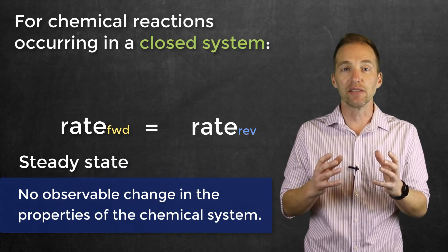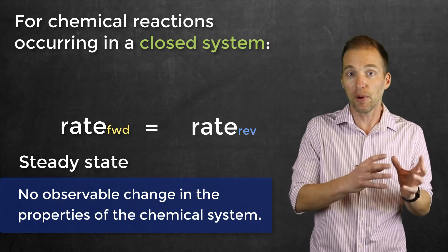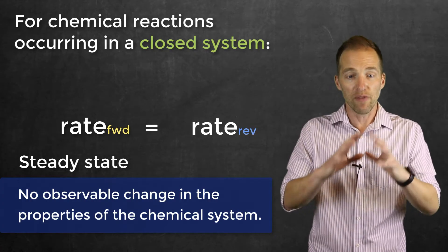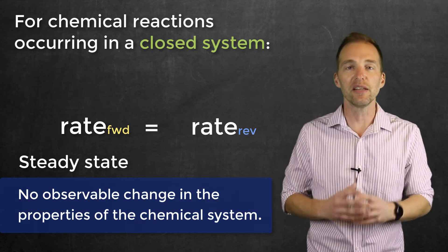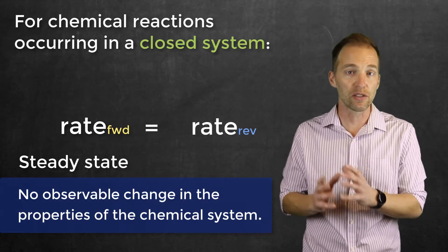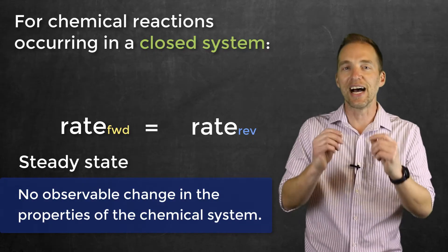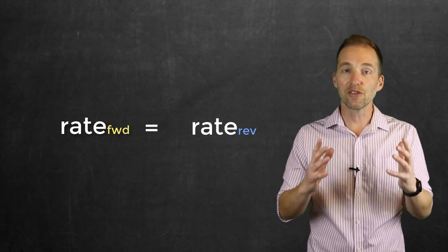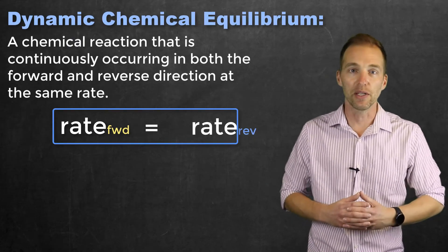What that means is the particles that are forming products and the particles that are products forming reactants are effectively doing so at the same rate. So from a macroscopic level, we don't see any changes — this is the steady state. But if we were to take a look down at the particle level, we would continue to see reactants forming products and products forming reactants. That is, it's a dynamic steady state. And because the rate of the forward equals the rate of the reverse, we've achieved something called chemical equilibrium.